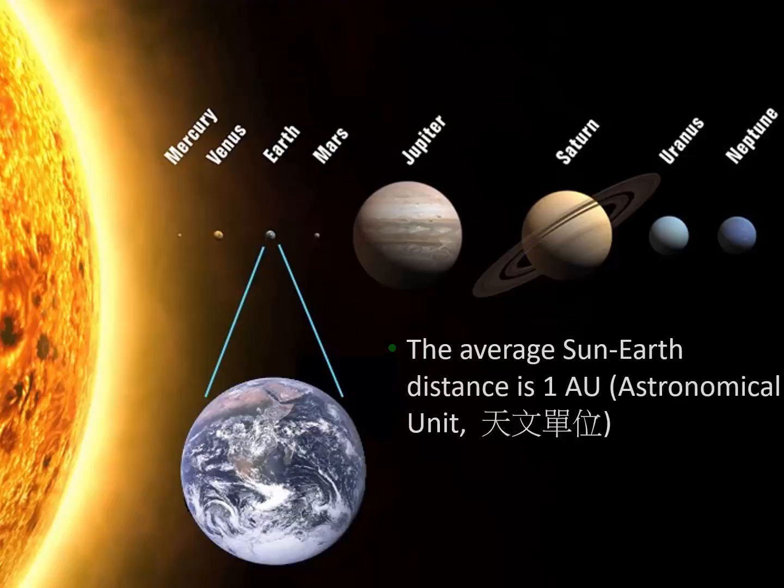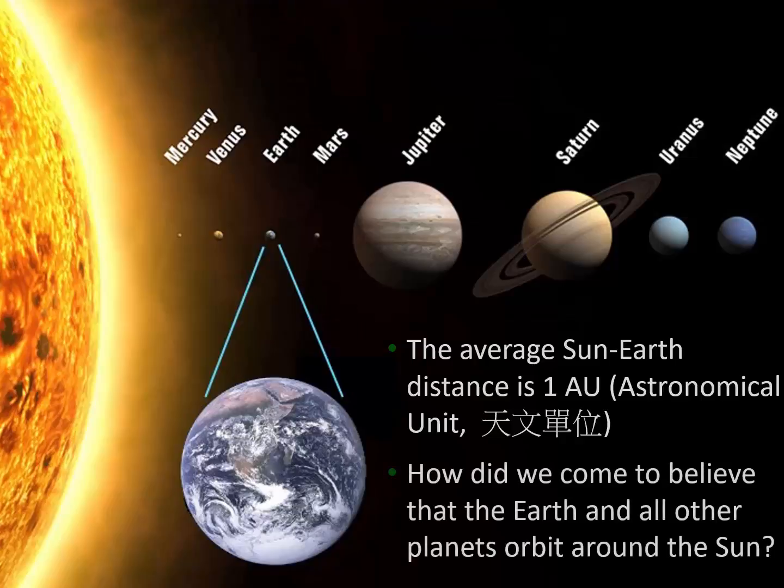Think about it — it's kind of amazing that we now believe the Earth and other planets orbit around the Sun. However, if we look at the Sun, the Moon, and also other stars, we can see that they rise from the East and set in the West every day. So how come we believe that we orbit around the Sun, yet the Moon orbits around us, and the motion of all those stars is due to our own self-rotation?